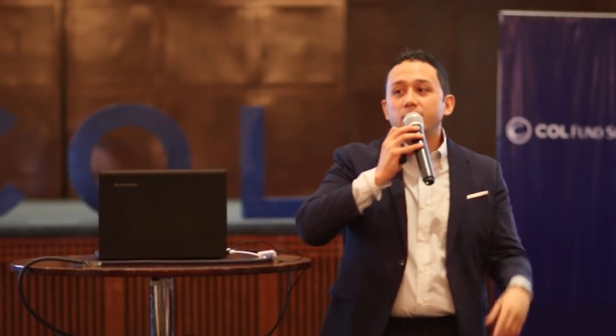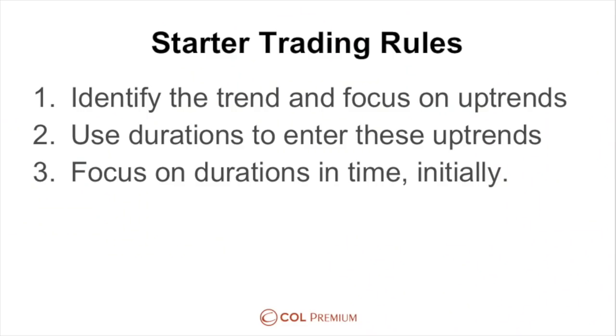When faced with deciding between uptrends, downtrends, and sideways, the path of least resistance is uptrends. Now that you know how to prioritize uptrends — when faced with durations in price or durations in time — the path of least resistance is time. So my suggestion: step one, identify the trend and focus on uptrends.